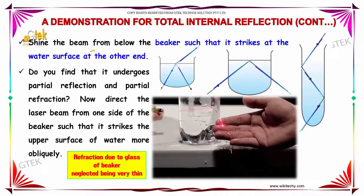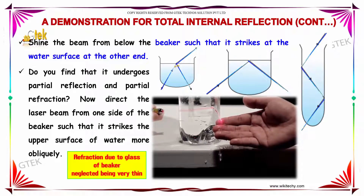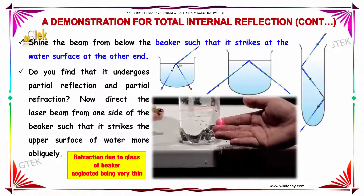Shine the beam from below the beaker such that it strikes the water surface at the other end. Do you find that it undergoes partial reflection and partial refraction? Here.